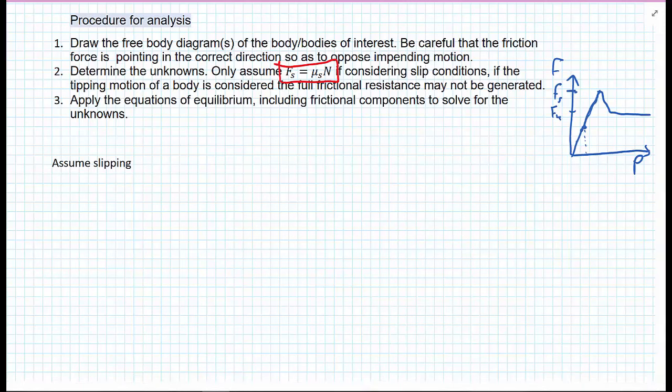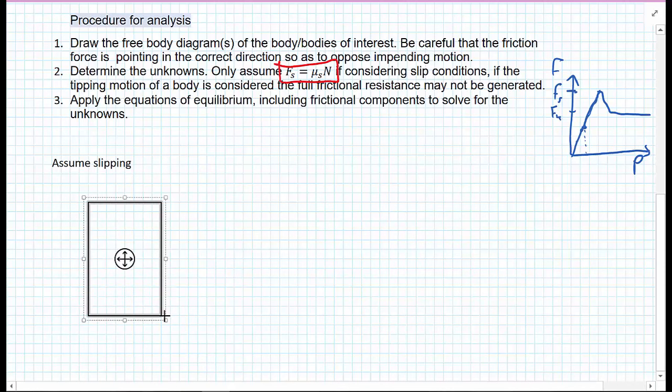The first thing we do is draw the free body diagram for this situation. We have the weight of the box W, the applied force P, and for taking moments, very important that we know what the height H is that it's applied. We will have a normal force, the equal and opposite reaction of the box on the floor.